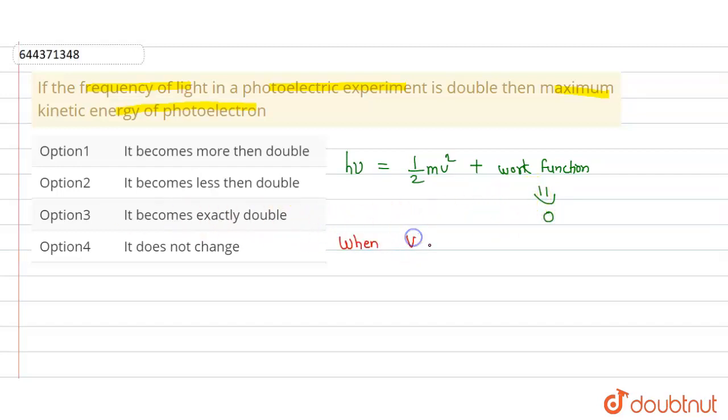So we will write: when frequency is doubled, kinetic energy is maximum when work function equals zero.